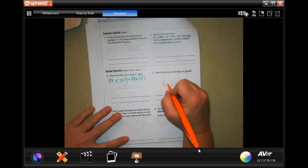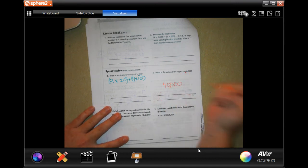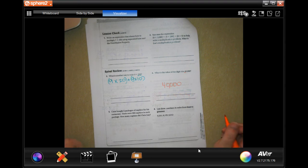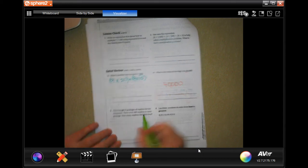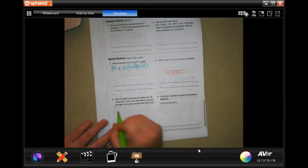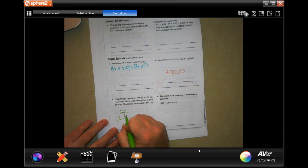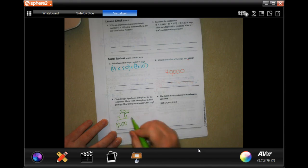Okay, all right. Chris bought six packages of napkins for his restaurant. There were 200 napkins in each package. How many napkins did Chris buy? Well, 200 times six. Well, six times two is 12, and then I have to add on those two zeros. 1,200 napkins.